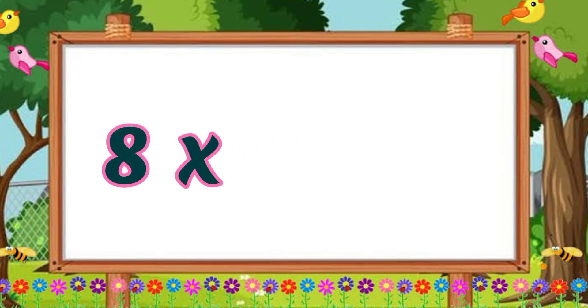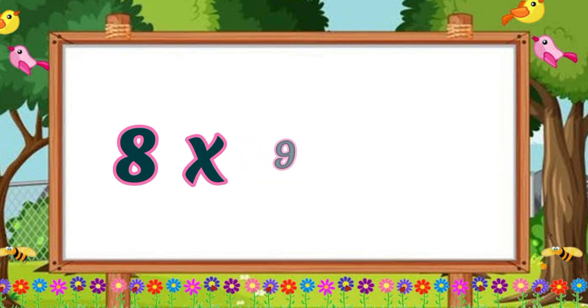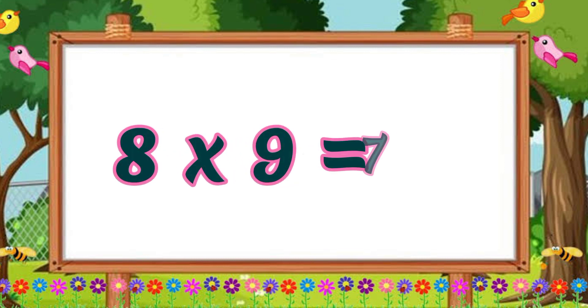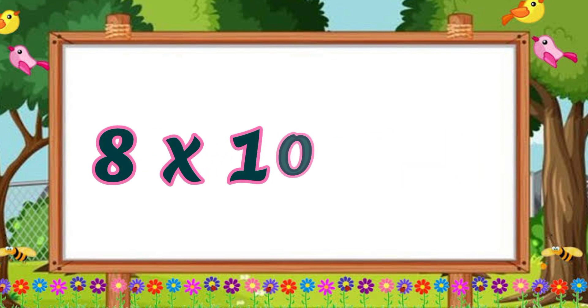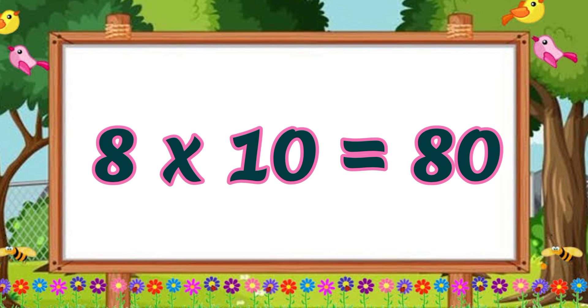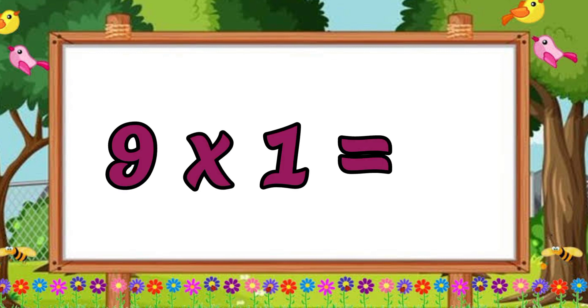Eight eights are sixty-four. Eight eights are sixty-four. Eight nines are seventy-two. Eight nines are seventy-two. Eight tens are eighty. Eight tens are eighty. Table of nine. Nine ones are nine.